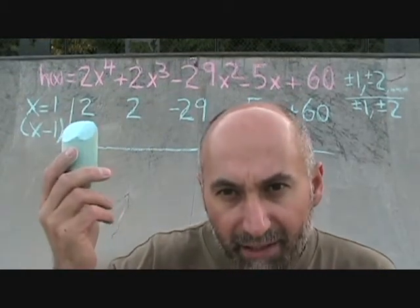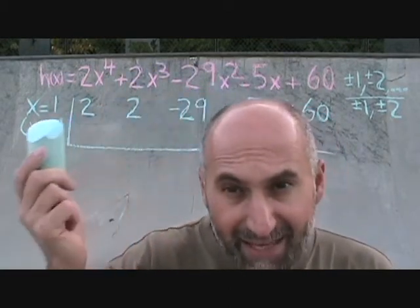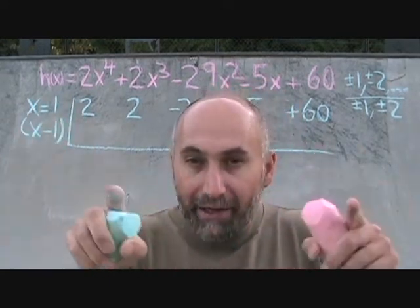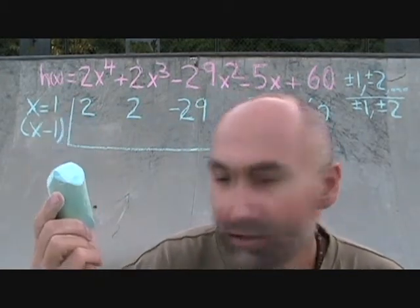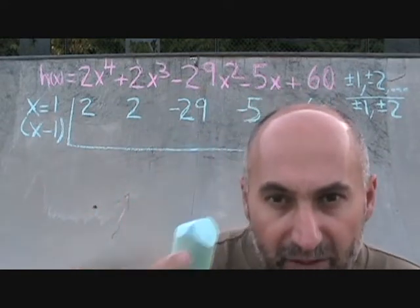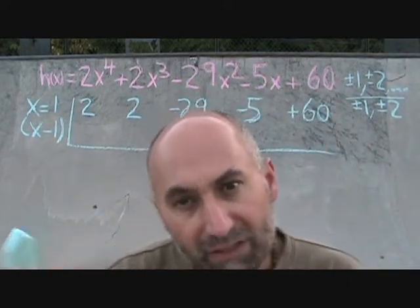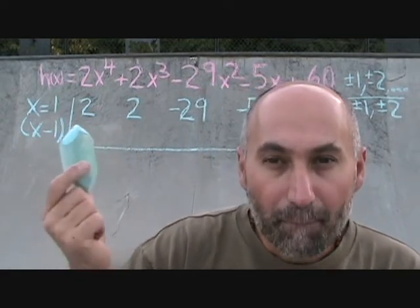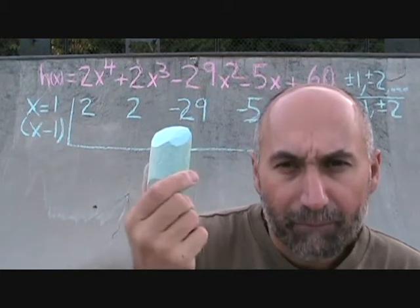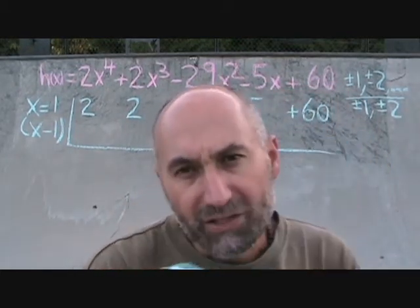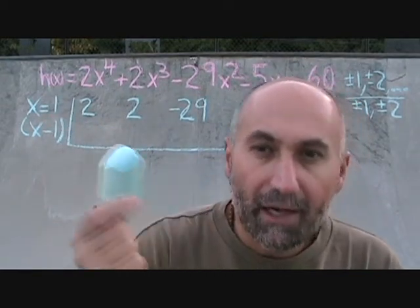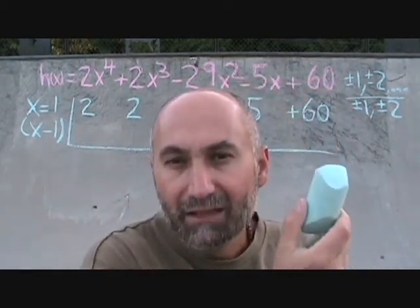The first number we're going to try to see if it's a possible factor is x equals 1, which means the factor is x minus 1. The 2 is going to come down, we multiply by 1, it comes up and we add those two values and continue this way. Right off looking at this, I know this doesn't work. We're multiplying by 1, so that's a negative — negative 29 minus 5 is going to be negative 34. That's not going to give us zero, so we could change the number to 2 and see if that works.